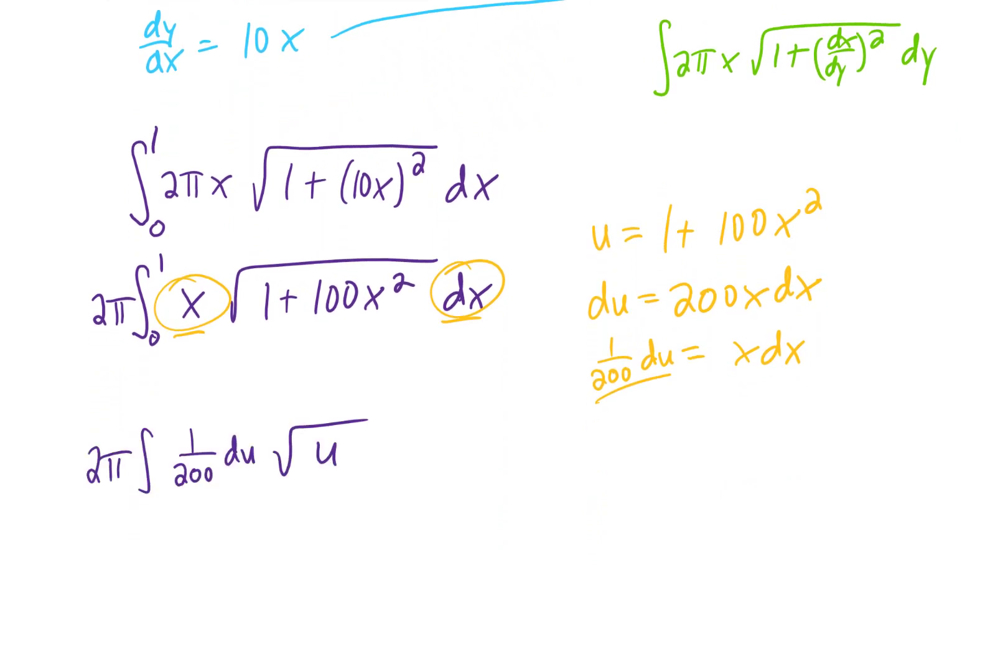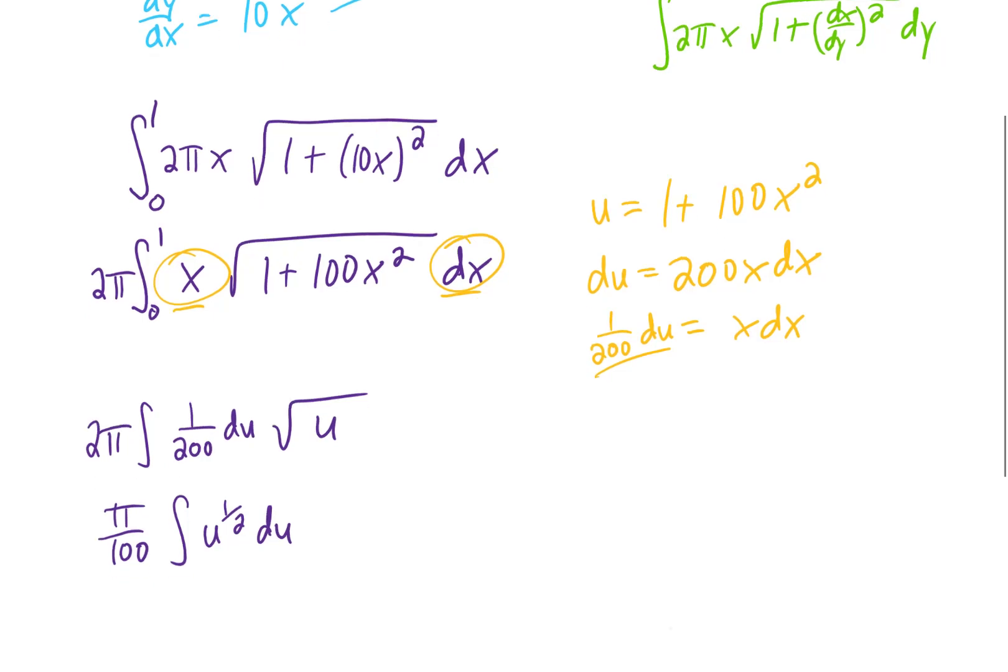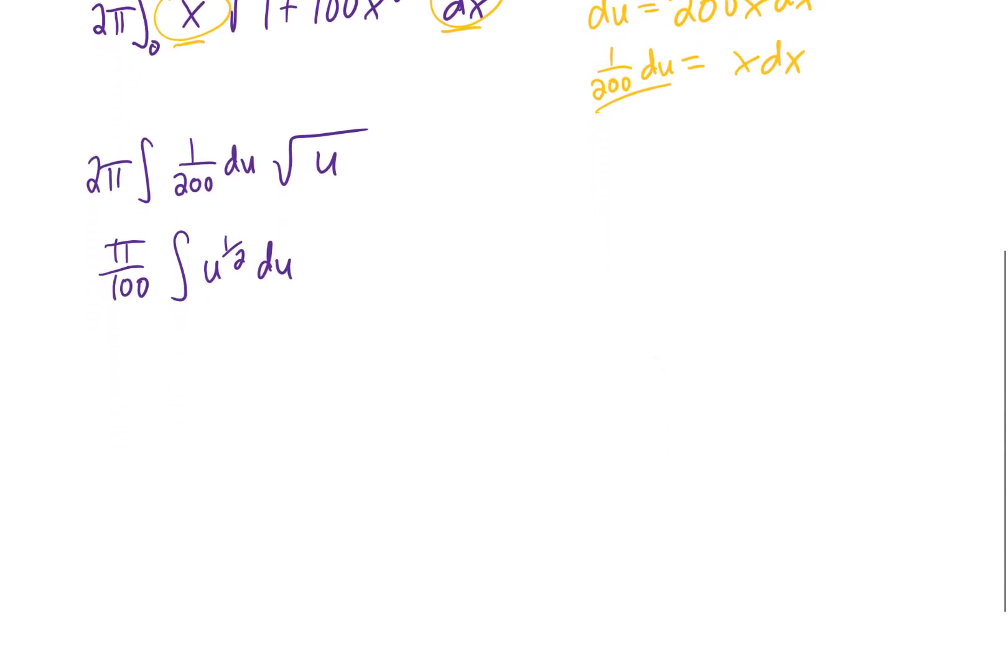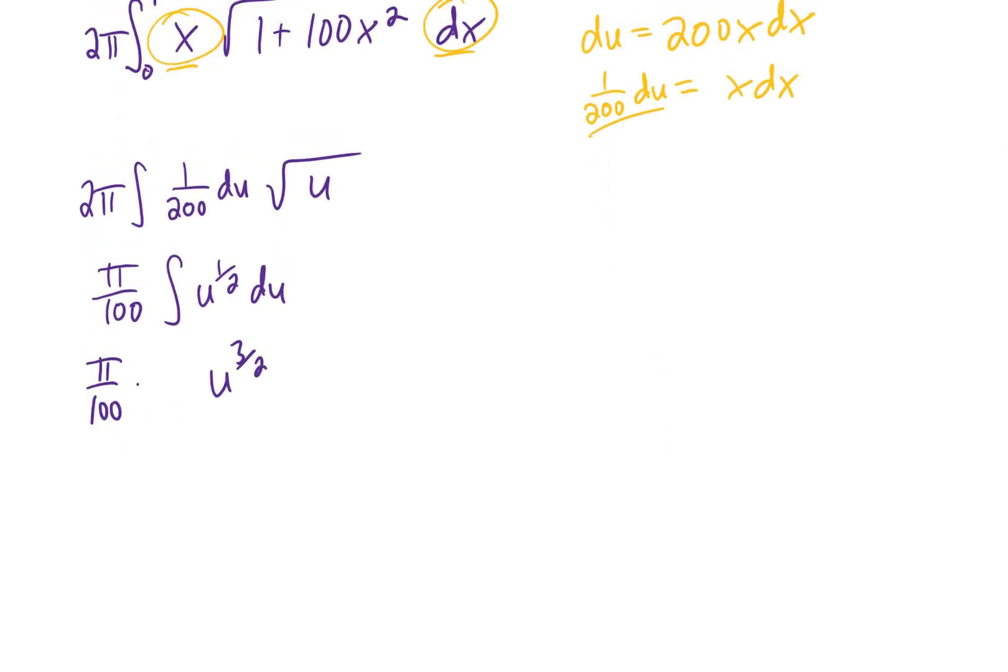Moving some things around and rewriting that square root as a 1 half power gives us this integral right here. I pulled the 200 out in front of the integral and reduced. Now, integrating is going to mean adding 1 to that power on u, and dividing by that 3 halves, which is the same as multiplying by 2 thirds.